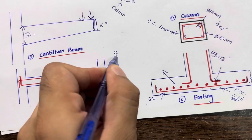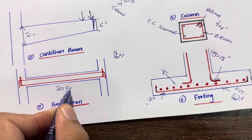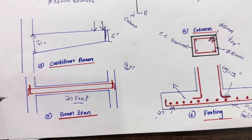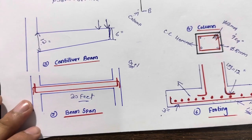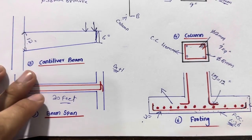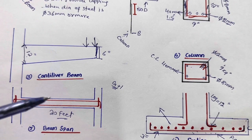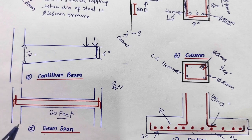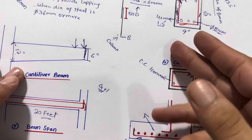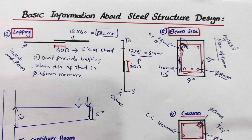Regarding beam span for a G+1 storey building — ground floor and first floor — do not exceed 20 feet span between two columns. Beyond this, you should hire a structural engineer, as longer spans significantly increase the risk of cracks. Beam and column sizes must be properly calculated based on applied loads. This is not simple to determine without proper structural calculation, so always engage a structural engineer. You can contact me via the link in the description or on WhatsApp.